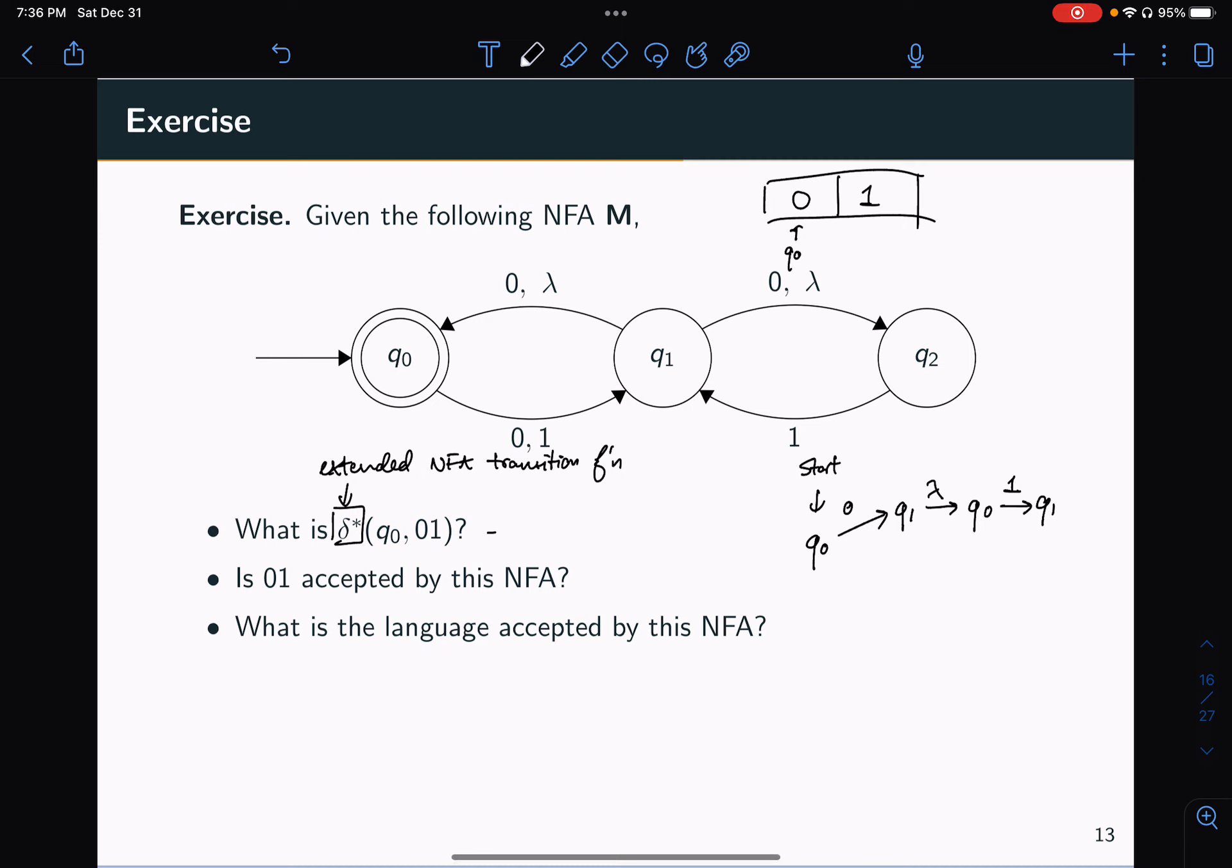So that means that if this returns a set of states, I already know that I have a set of states containing Q1. Maybe there's more. Let's see.